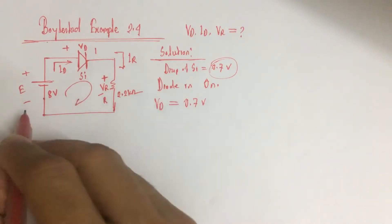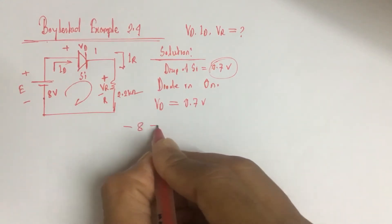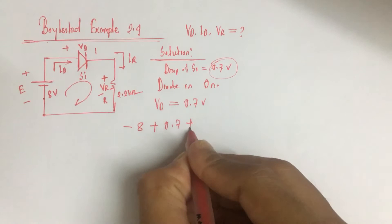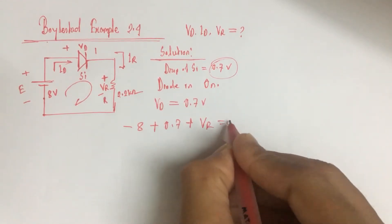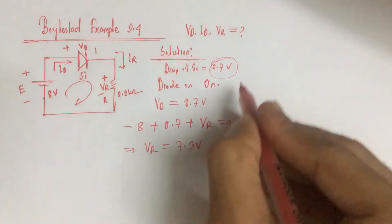So if we run the voltage law, we get minus 8 plus VD, which is 0.7, plus VR equals 0. That gives us VR equals 7.3 volt.